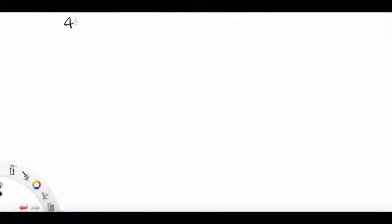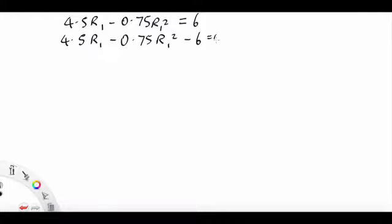So from over the page, we have 4.5 R1 minus 0.75 R1 squared equals 6. First thing we're going to do is take 6 over all the same side minus 6 equals 0.